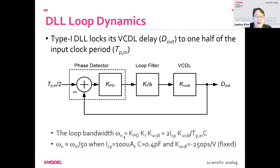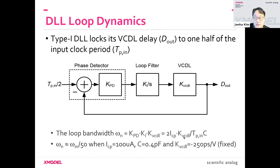In the bandwidth expression, it contains this parameter TP, which stands for clock period. So it's inversely proportional to the clock period, which means it's proportional to the clock frequency. So it's already proportional to the clock frequency when all the other parameters are constant — we'll just do it that way.